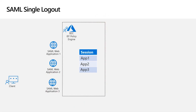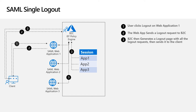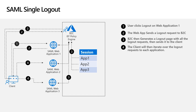Now we have a list of applications to log out. To initiate single logout, the user clicks the logout link on web application 1. Web application 1 sends a SAML logout request to B2C. B2C then iterates through the session table, retrieving the SAML logout URL from the metadata for each application. It generates a logout response page containing all the SAML logout requests and sends it back to the client's browser. The browser uses JavaScript to iterate over the logout requests and send them to the relevant applications. When complete, the same JavaScript returns a SAML logout response back to the initiating web application. At this point, all web applications are logged out.